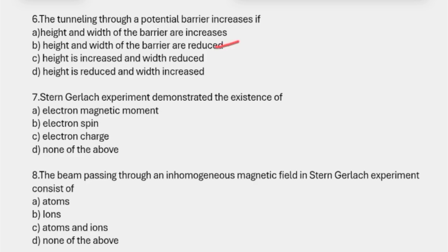Seventh one: Stern-Gerlach experiment demonstrated the existence of electron spin.